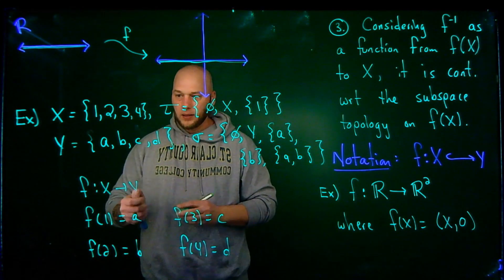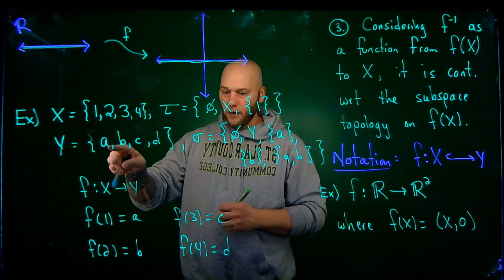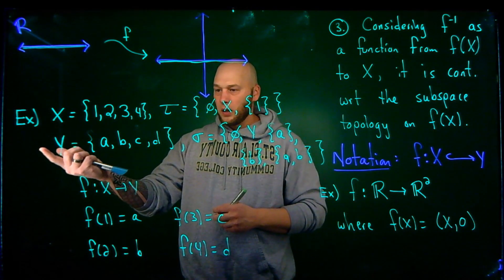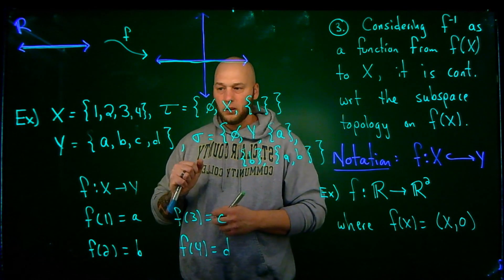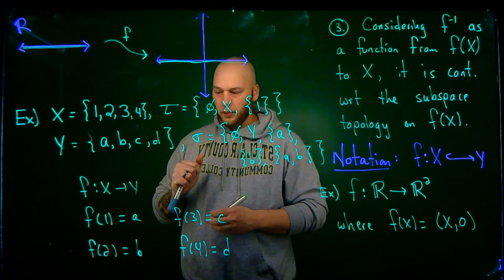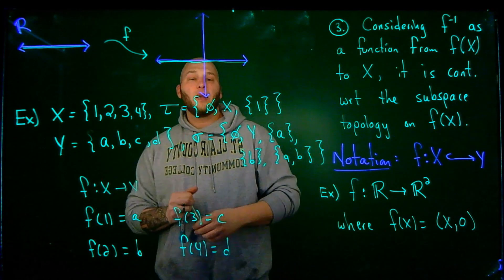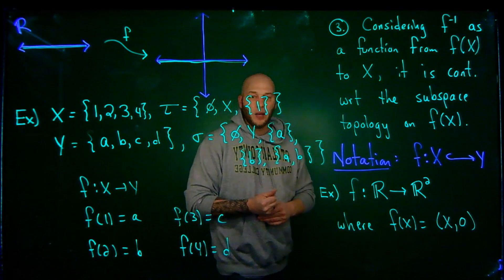So then if I say, okay, well, the preimage of F of X would be all of X. F would be an injection. And the preimage of, let's say, like the singleton A would be the singleton 1. And therefore, that would be a topological embedding.